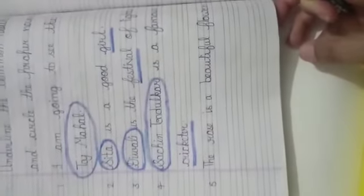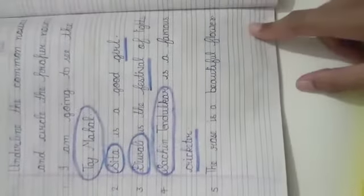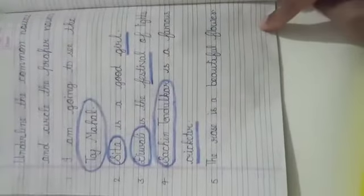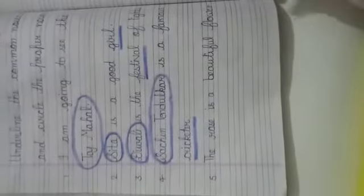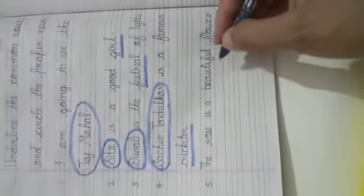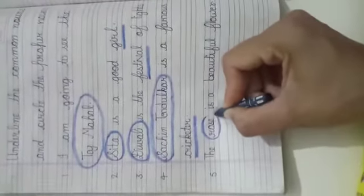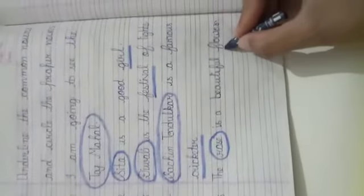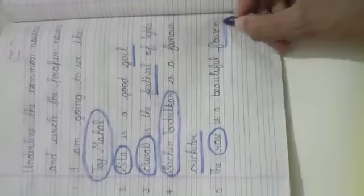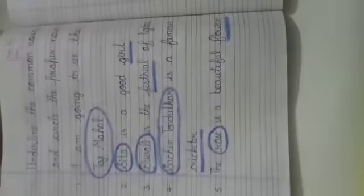The last sentence is 'The rose is a beautiful flower.' If we are talking about a special or particular flower, that is rose. So rose is a proper noun. We will circle it. And flower is a common noun. We will underline it.